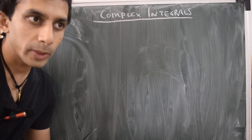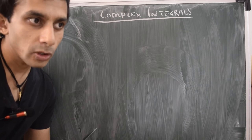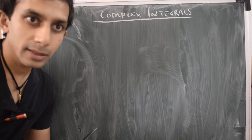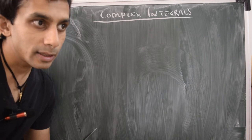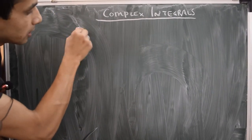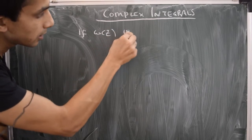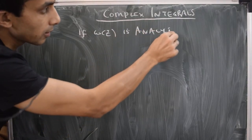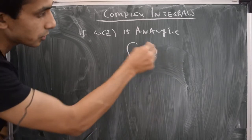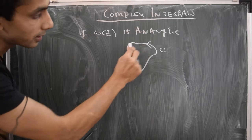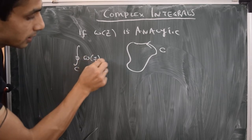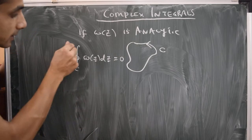Hello and welcome back. In the previous video, we talked about Cauchy's integral theorem: if W(z) is a complex analytic function defined over a simply connected region of the complex plane and c is some simple closed contour, then the integral of W(z) over the contour vanishes — that is, if W(z) is analytic inside and on the contour c, then the integral of W(z) over c is 0.